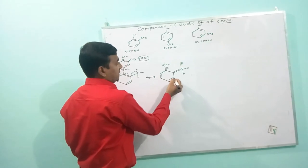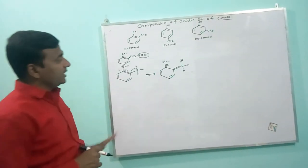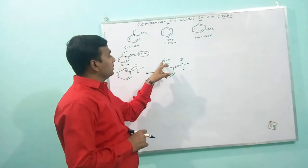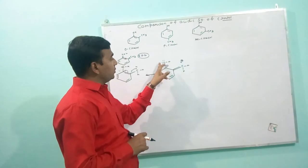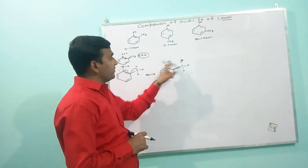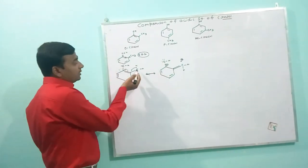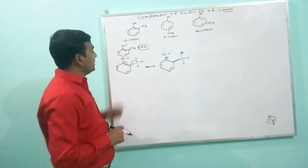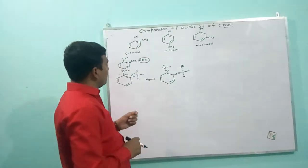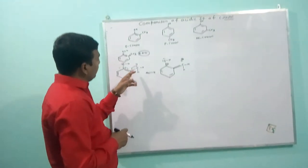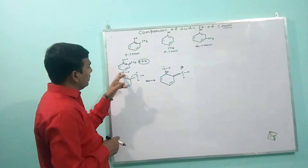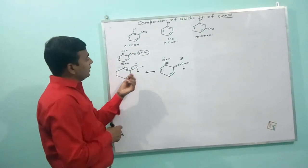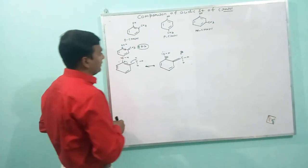This effect is called hyperconjugation effect. You are seeing here that the electron density will increase on the oxygen atom. As a result, hydrogen atom cannot easily escape from this bond. And here, two effects simultaneously apply and increase the electron density on OH group due to plus-I effect as well as hyperconjugation effect.